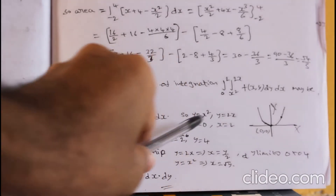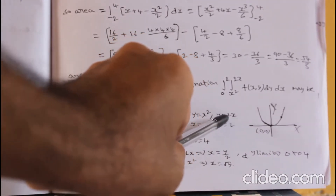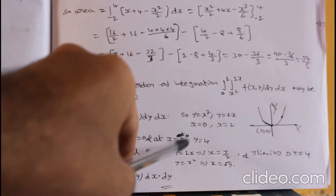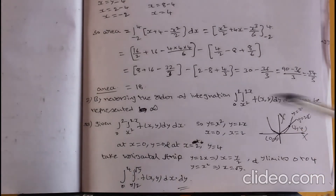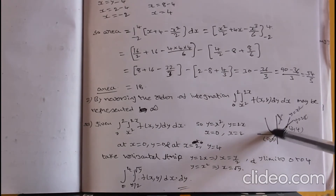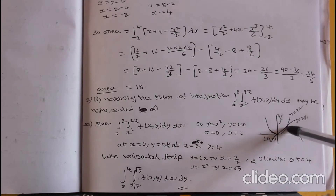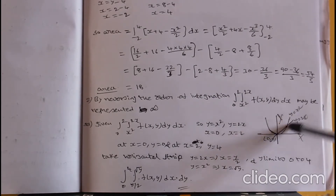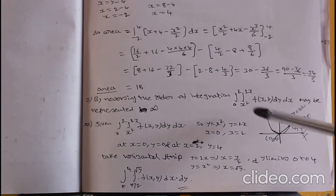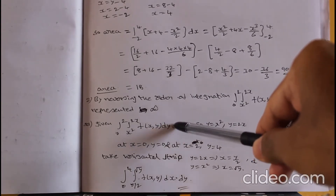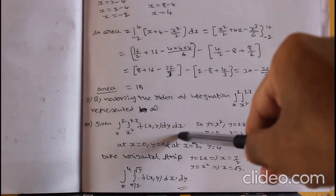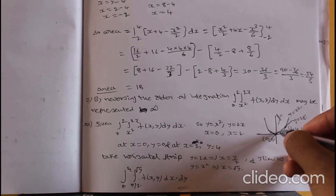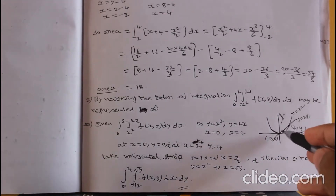At x = 0, y = 0, and at x = 2, y = 2×2 = 4 for the line y = 2x. So draw the line passing through (0, 0) and (2, 4). Now we are interchanging the order - it is given as dy dx, so we need to find new limits for dx dy.